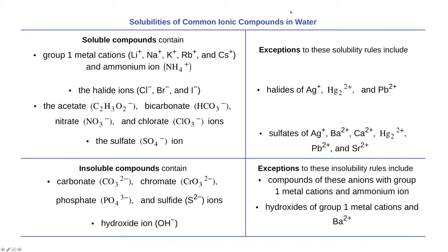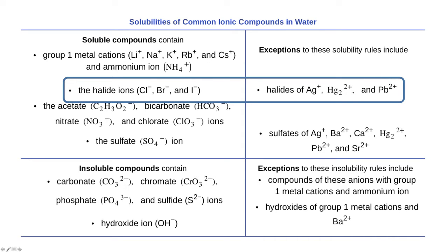Ionic compounds are typically classified as either soluble or insoluble in water, and we have solubility rules that predict which combinations of ions make soluble or insoluble compounds. In this case, lead(II) iodide is the insoluble compound — it is an exception to the normal rule of halides being soluble. With Pb²⁺, lead iodide is not soluble.